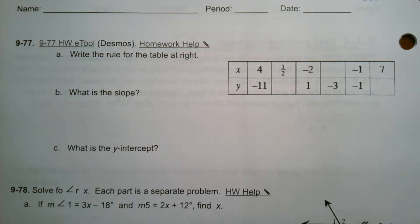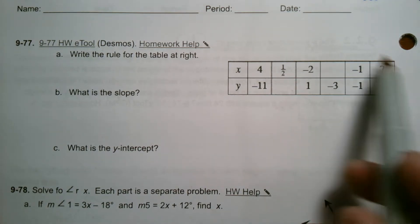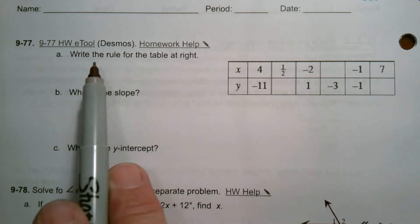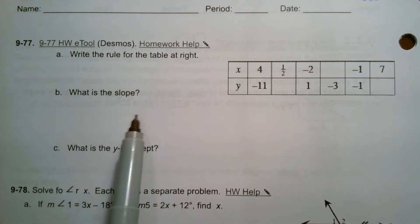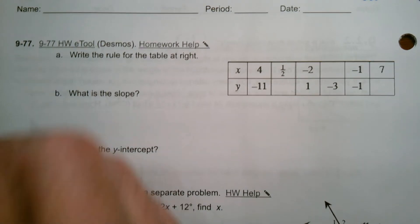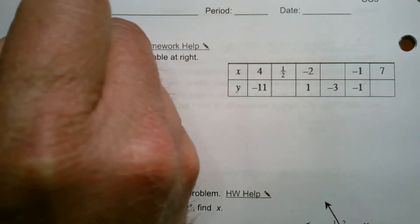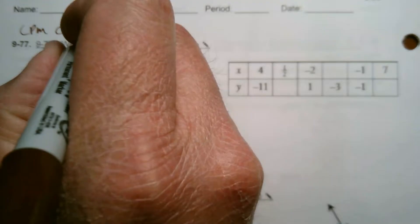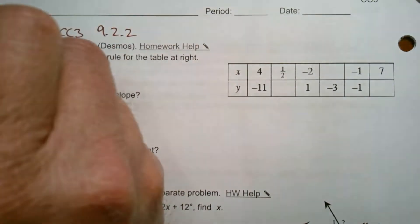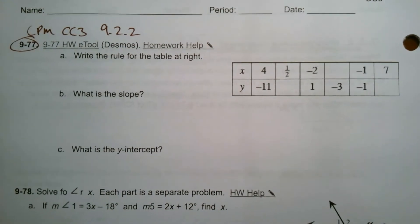Hey folks, Mr. Dell here. We are looking at, given a table, we've got to then determine a rule and then interpret that rule by talking about the components of slope and y-intercept. So this is a problem from CPM's course 3, and this is section 9.2.2, specifically number 9-77.